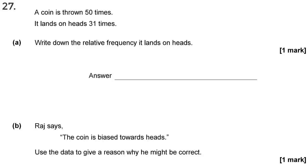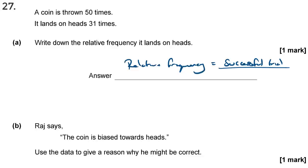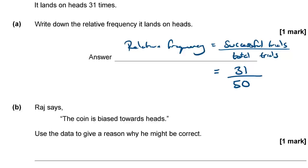Question 27: A coin is thrown 50 times and lands on heads 31 times. Write down the relative frequency of heads. Relative frequency = successful trials ÷ total trials = 31/50. There's no need to simplify probability fractions for extra marks — leave it as 31/50.